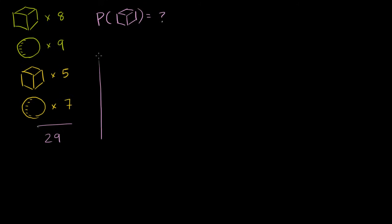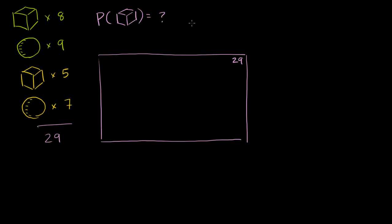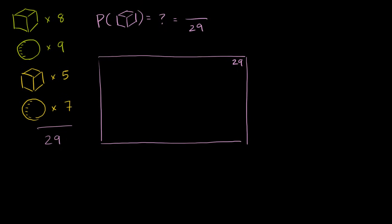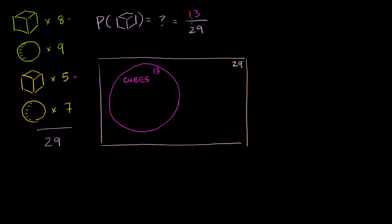Let's draw all of the possible objects as this big area. There are 29 possible objects, 29 equal possibilities for the outcome. How many of them meet our constraint of being a cube? I have eight green cubes and five yellow cubes, so there are a total of 13 cubes. The probability of getting a cube is 13 over 29.